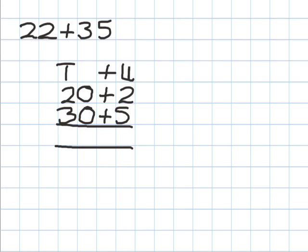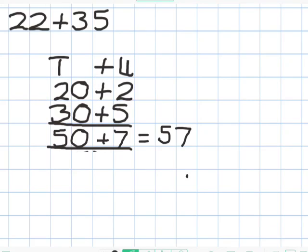Underneath, we've drawn the two lines to show that next we're going to total our tens and our units. Here you can see that we've added the 2 and the 5 and written in the 7 as our total of units. And the 20 and the 30 has given us a total of 50. Adding the 50 and the 7 together, we get our answer 57.